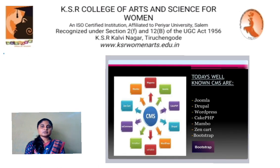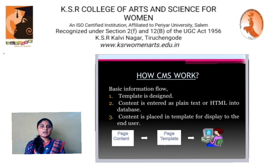There are two elements of CMS: the content management application and the content delivery application. Today, well-known CMSs are Joomla, TruBall, WordPress, CakePHP, Mambo, Zen, Code, and Bootstrap. How does CMS work? The basic information flow: a template is designed, and content is entered as plain text or HTML into a database.